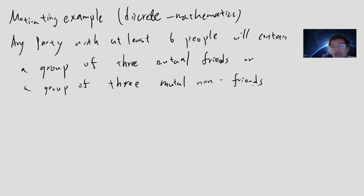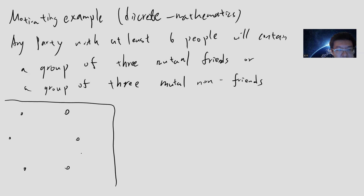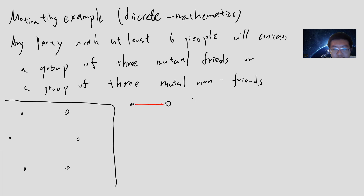So basically, this means that given any six people, either three of them know each other or three of them don't know each other. Simply speaking, you can turn this into graph theory. Given any six points, if you color any two points using red - let's say I colored these two points using red, that means they know each other. And using blue means that they don't know each other.